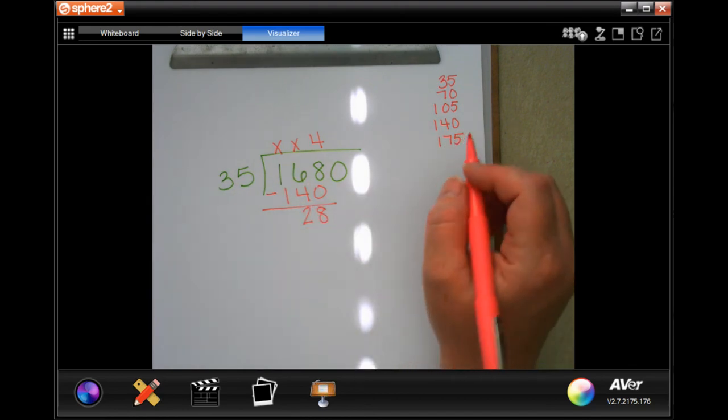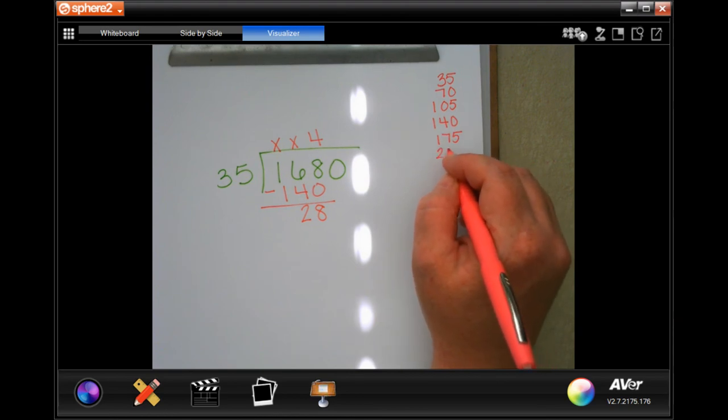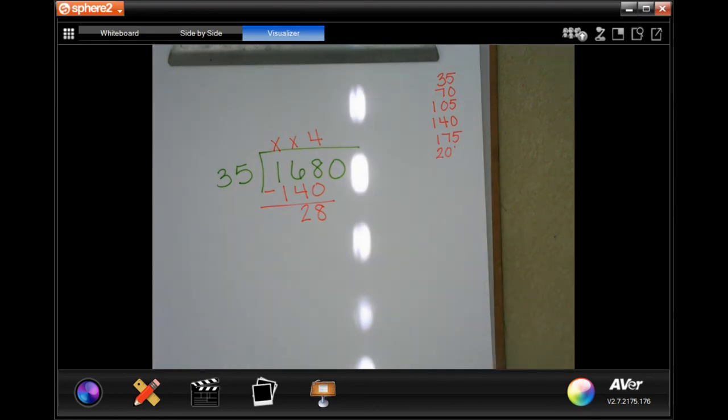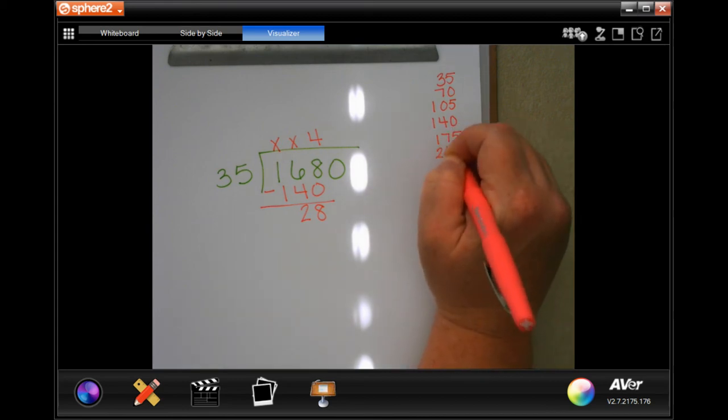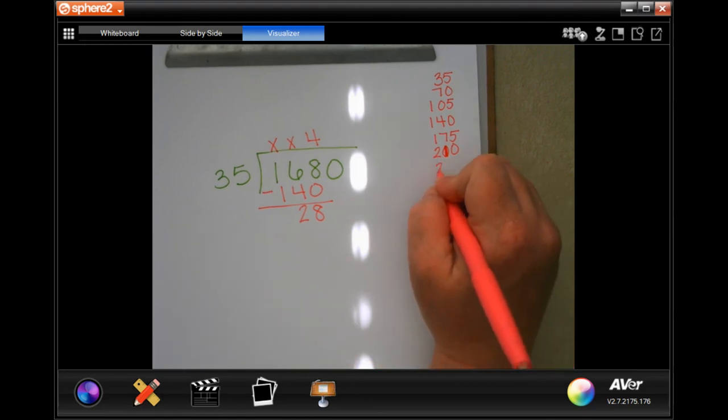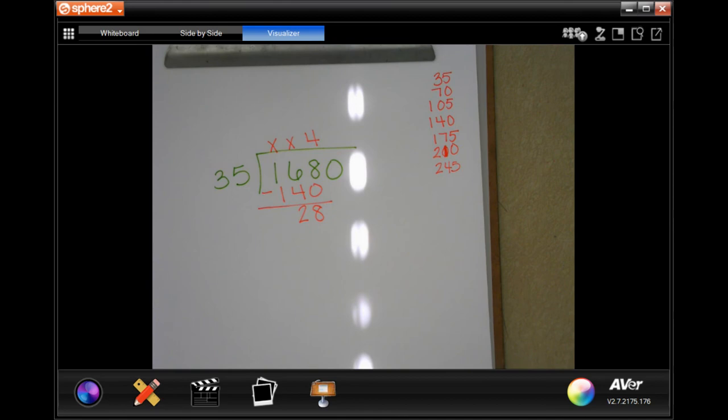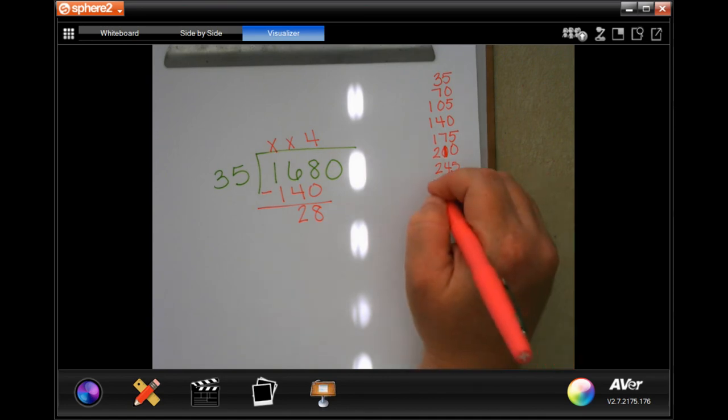Hold on just a second. There's no shame in my game. I'm absolutely using my calculator to find out. That works. That's what I thought. And then 2, 4, 2, 4, 5. And then 280.